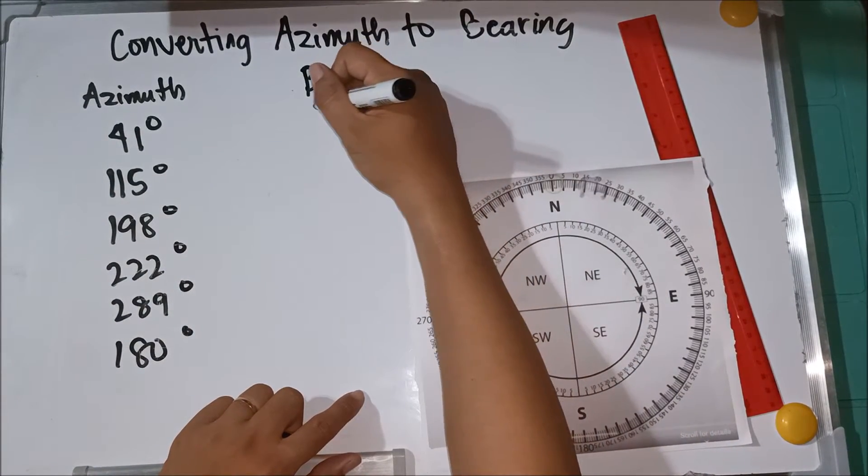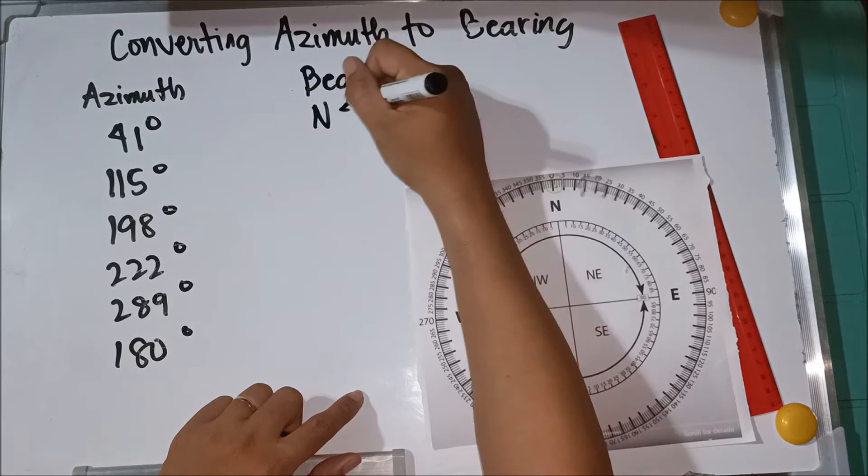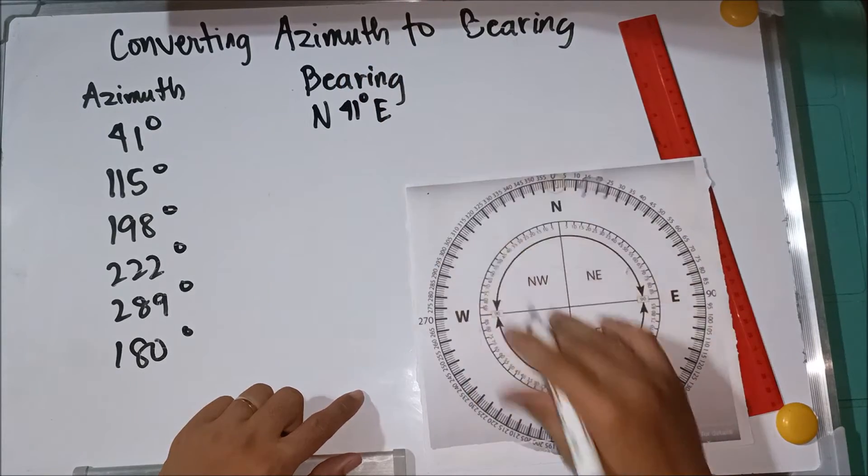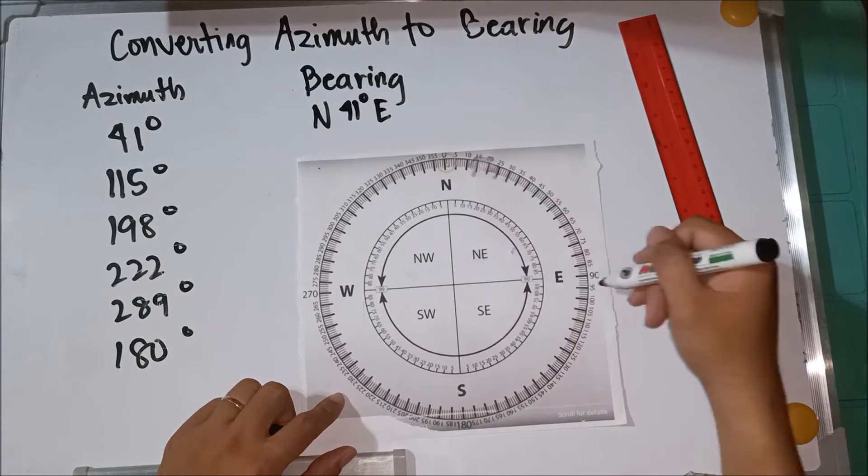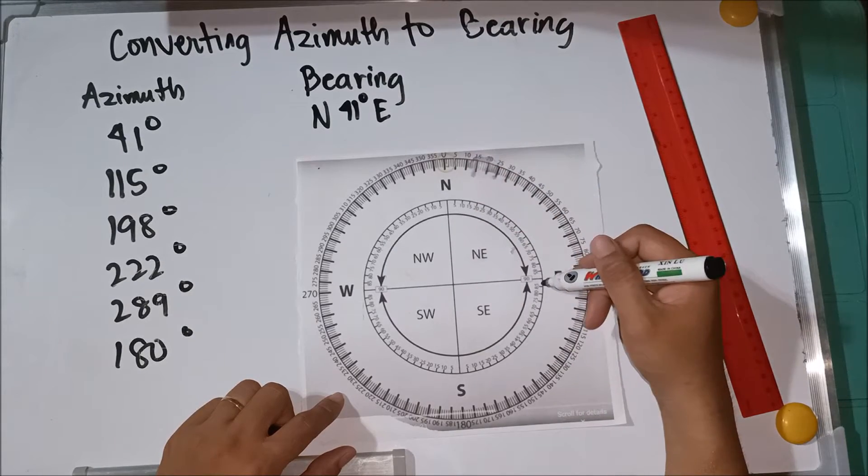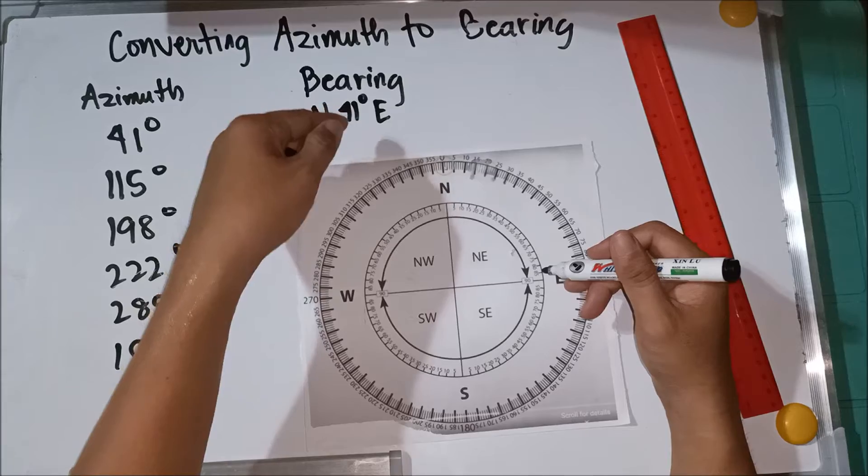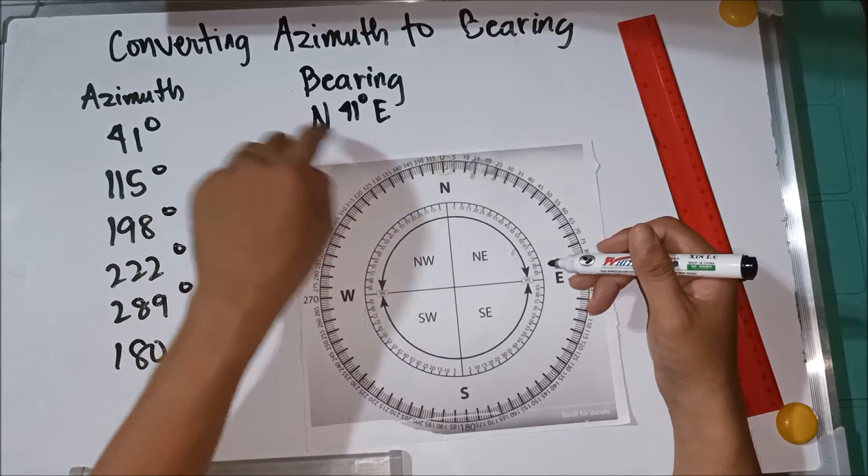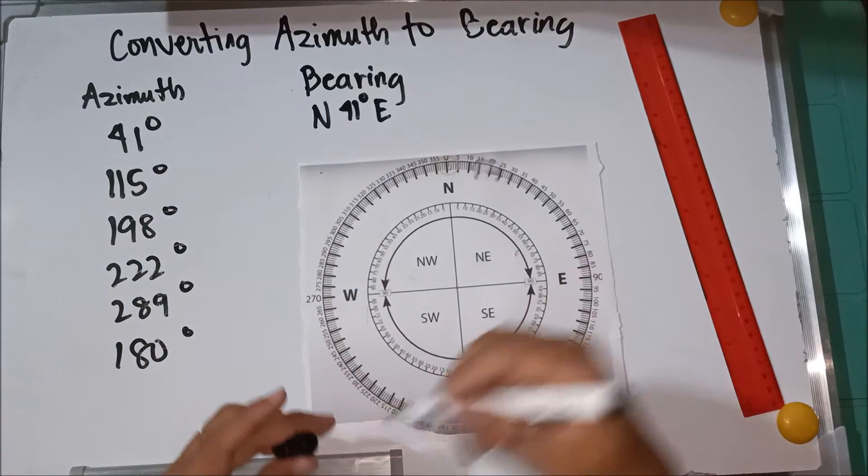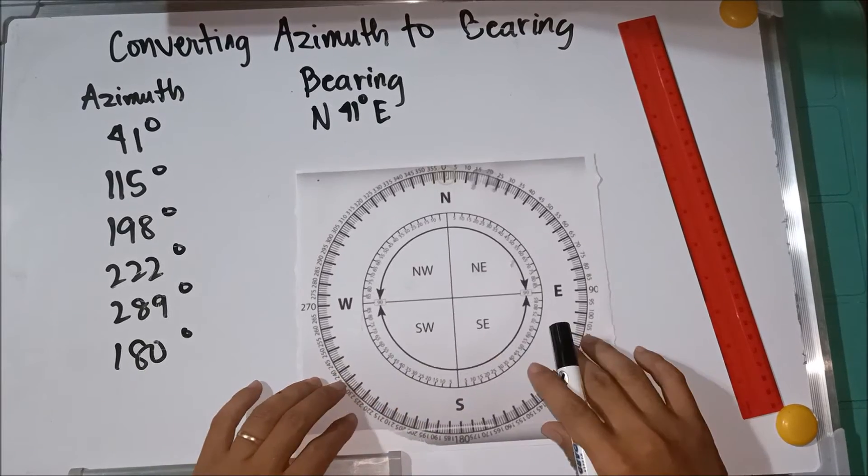So it falls in the northeast quadrant. So basically the bearing is, since it falls in the northeast, it's the same as the azimuth number. So northeast 41 degrees. If it falls in the northeast quadrant below 90 degrees, so automatic the azimuth is the same as the bearing. Only add the direction northeast.